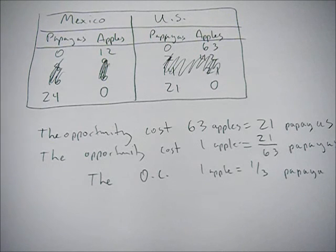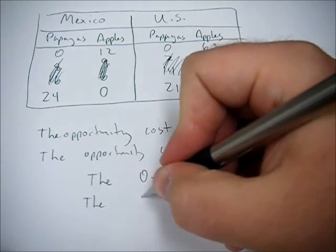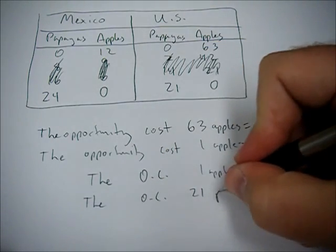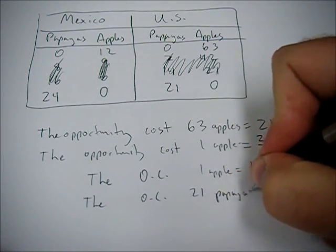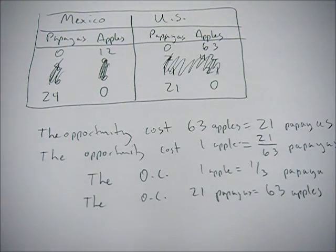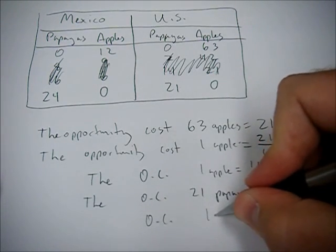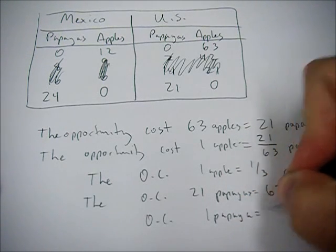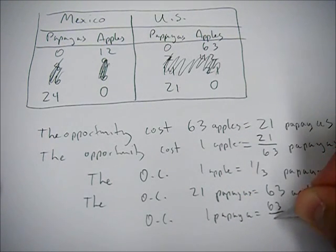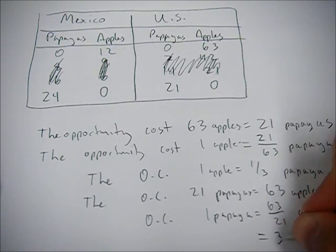So in order to get one apple we have to give up one-third of a papaya. Now we can flip it the other way around and we can start with the OC of 21 papayas equals 63 apples. Do the same process as before: divide both sides by 21.